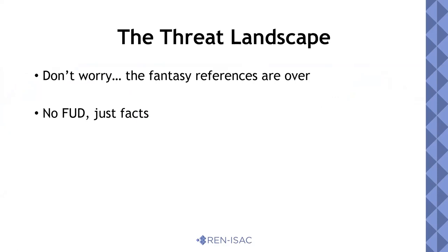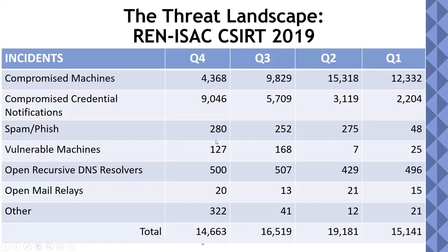I'm not going to focus on fear, uncertainty, and doubt anymore — just facts. Those facts are based on our C-CERT activities. The REN-ISAC acts as a computer security incident response team for any EDU organization. We get feeds from many different places, parse those feeds to find anything that looks like it started or came through a .edu, analyze it, and send it on to that EDU. These are the most common incidents we see through our C-CERT from all of last year. Compromised machines is anything with malware or a virus.